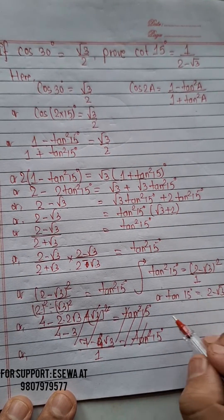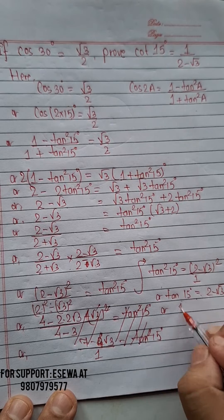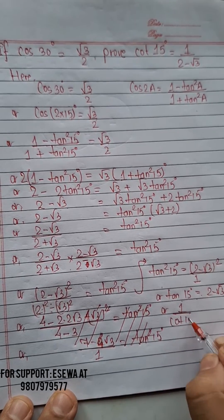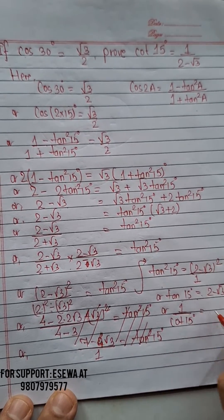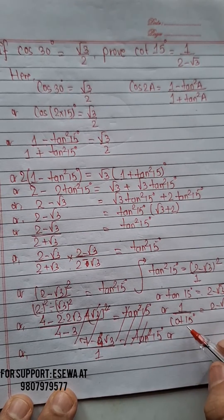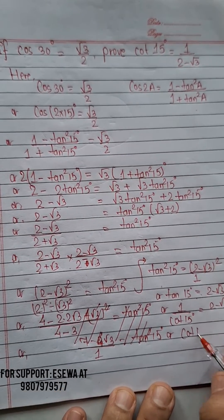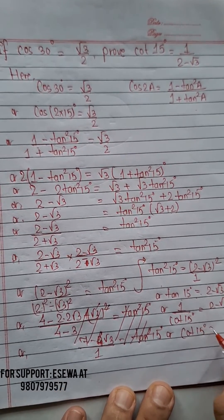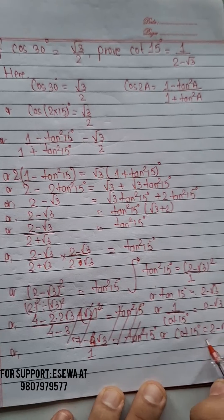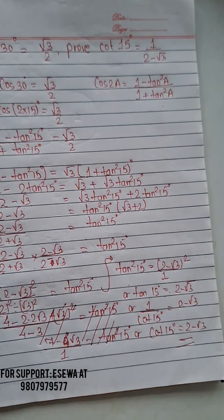Since tan 15° = 2 - √3, and tan 15° = 1 / cot 15°, by inverting both sides we get cot 15° = 1 / (2 - √3)... which simplifies to cot 15° = 2 - √3. That's how our solution is complete.